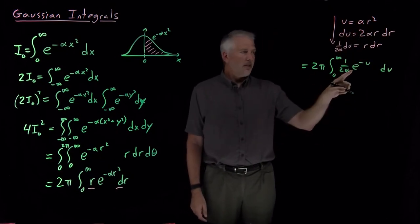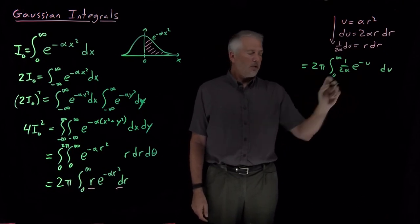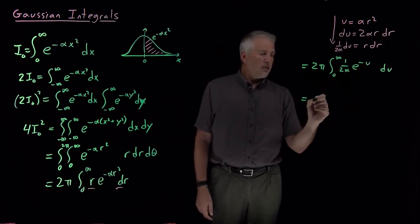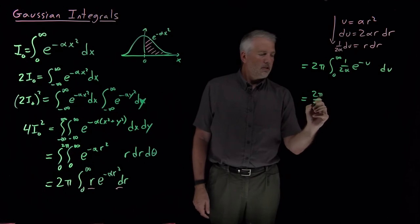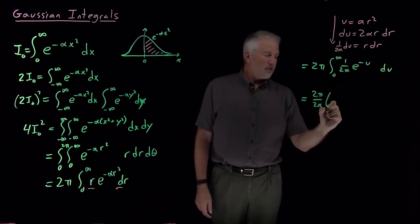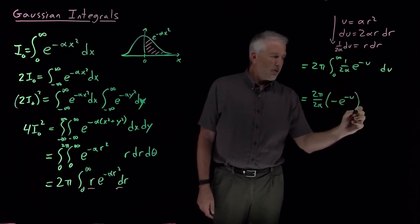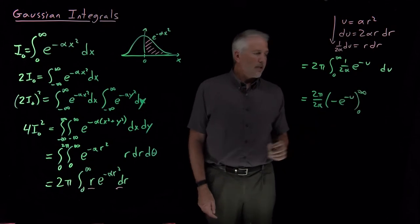And that's the integral of a normal exponential function. Integral of e to the minus u is minus e to the minus u. I'm now evaluating that from 0 to infinity.